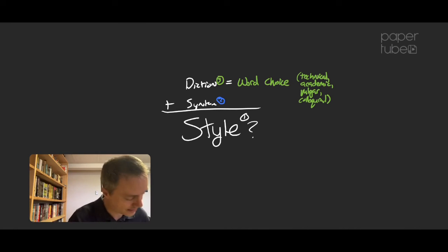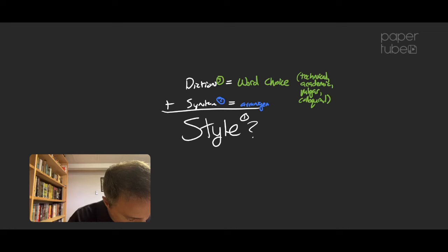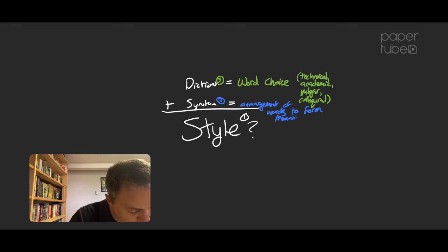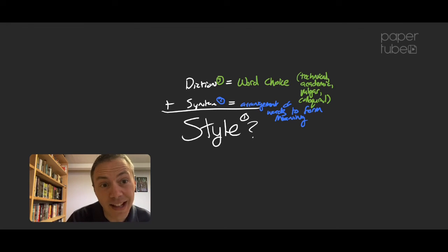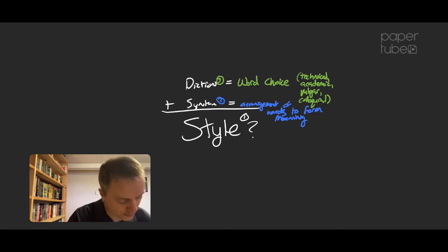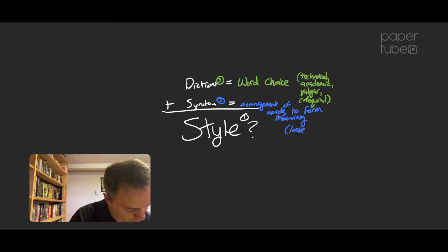How about syntax? That is the arrangement of words to form meaning — that's all that syntax is. And it can be one of two types: it can either be loose, which is our fourth big idea, or it can be periodic, which is our fifth big idea.